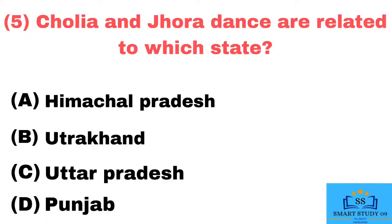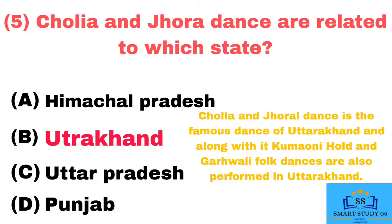Q5. Cholia and Jhara dance are related to which state? Answer: Uttarakhand. Cholia and Joral dance are the famous dances of Uttarakhand, and along with them, Kumauni and Garhwali folk dances are also performed in Uttarakhand.